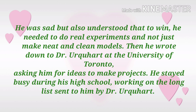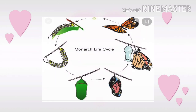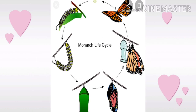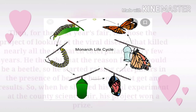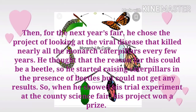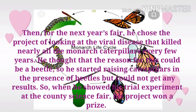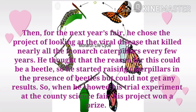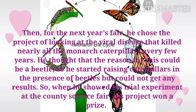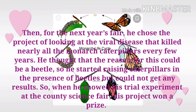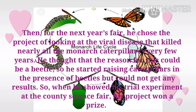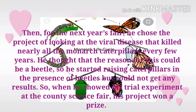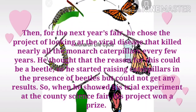Then he wrote to Dr. Uku Hart at the University of Toronto, asking him for ideas to make projects. He stayed busy during his high school, working on the long list sent to him by Dr. Uku Hart. Then for the next year's fair, he chose the project of looking at the viral disease that killed nearly all the monarch caterpillars every few years. He thought that the reason for this could be a beetle, so he started raising caterpillars in the presence of beetles, but could not get any results. So when he showed his trial experiment at the county science fair, his project won a prize.